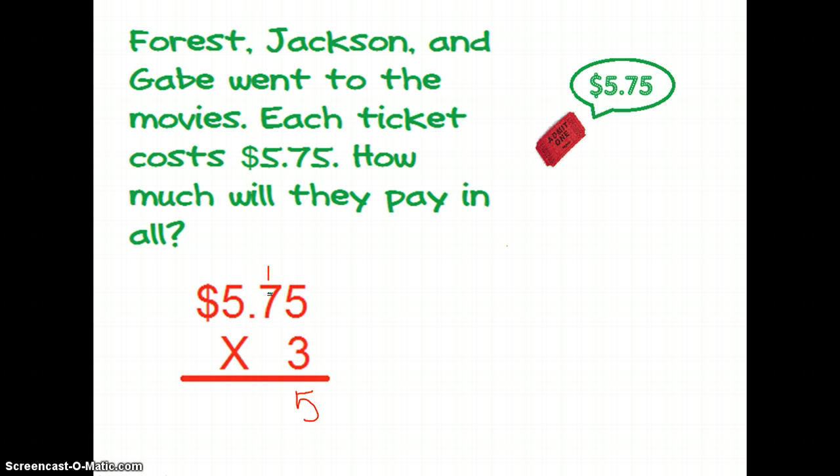Three times seven is twenty-one plus one more would make twenty-two. I'm going to write down my two, carry my two.